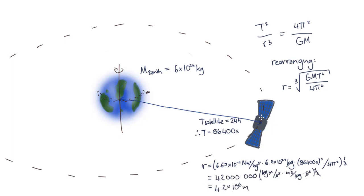Remember that this number is from the centre of the Earth. As we know that the Earth has a radius of 6,400 kilometres, then we know that geostationary satellites are located at about 36,000 kilometres above the surface of the Earth.